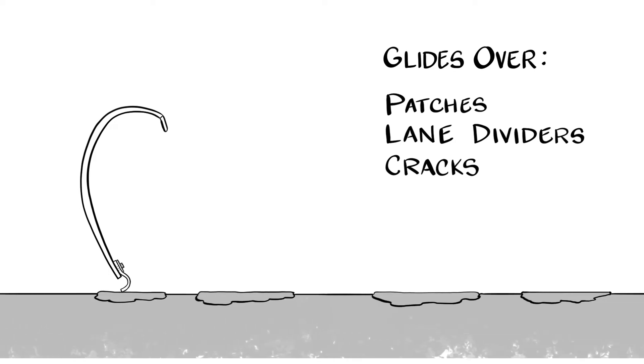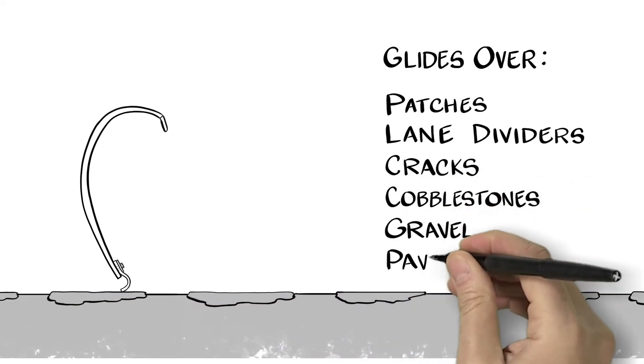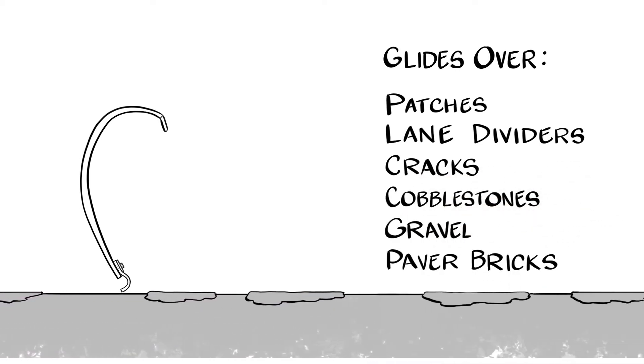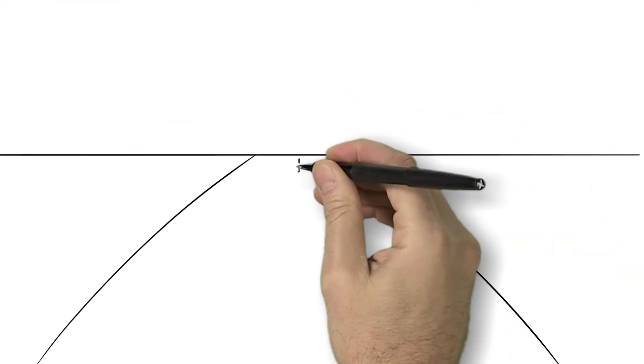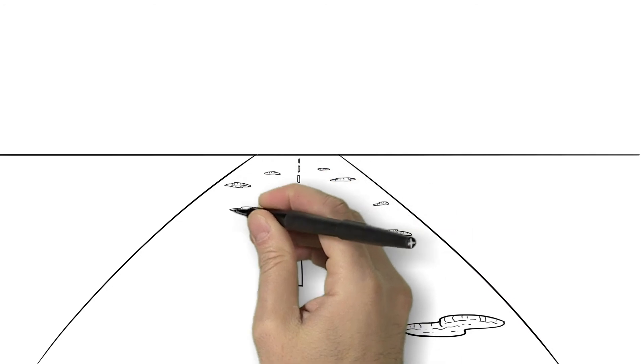In fact, it'll work on most road surfaces, including cobblestones, gravel, paver bricks, and more. But what about the cost? Well, actually, there are three main ways the Nordic Edge saves cities like ours money.